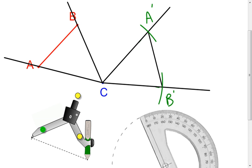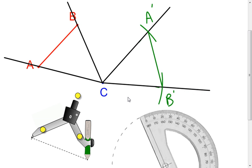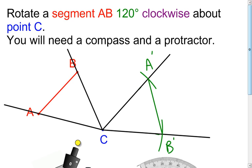And then I can just connect the dots with the segment. What I'm going to do is I'm going to change the color of that just so we can see it a little bit better. I'll make it that green color. So what I've done now is, using my compass and my protractor and essentially straight edge, I've rotated segment AB over here to segment A prime B prime using that 120 degree angle in a clockwise rotation.